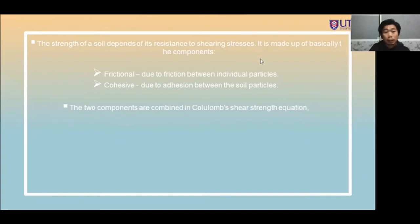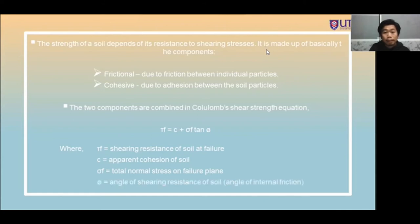The two components are combined in Coulomb shear strength equation, which is the formula is shear stress equals C plus sigma F tan phi. Where shear stress is shearing resistance of soil at failure, C is apparent cohesion of soil, sigma F is total normal stress on failure plane, phi is the angle of shearing resistance of soil.